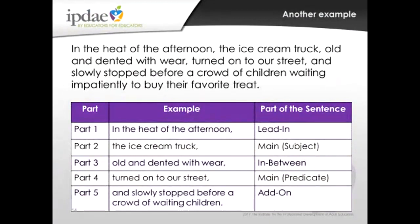Let's check: can students identify each segment in a sentence? For 'In the heat of the afternoon, the ice cream truck, old and dented with wear, turned onto our street and slowly stopped before a crowd of waiting children' — can they find the lead-in, the subject, the predicate, the in-between, and the add-on? This chart helps students expand beyond just writing 'the ice cream truck turned onto our street' into a much more effective sentence.